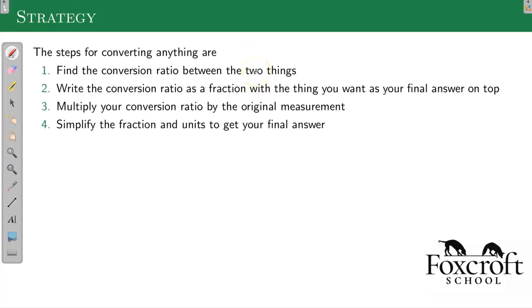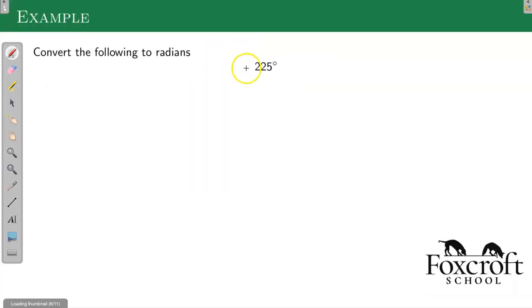Here's a strategy for converting anything. We're specifically going to do it with degrees and radians, but you can convert anything in this way. First thing is find the conversion ratio between the things. So for us that's 180 equals pi radians. Write the conversion ratio as a fraction, with the thing you want as your final answer on the top. I almost think about it as the thing I want to get rid of is on the bottom. Then you multiply your conversion ratio by the original measurement, and then you simplify. That sounds really complicated, it's really not too bad.